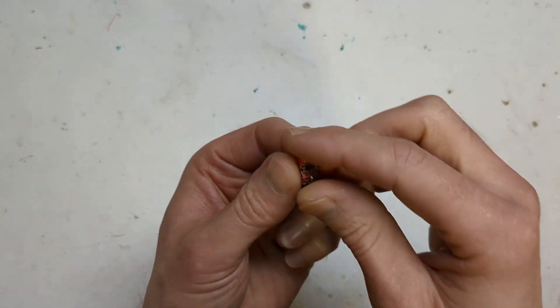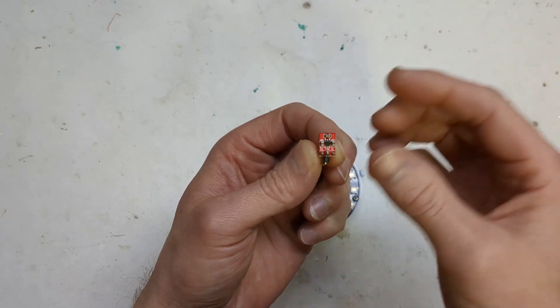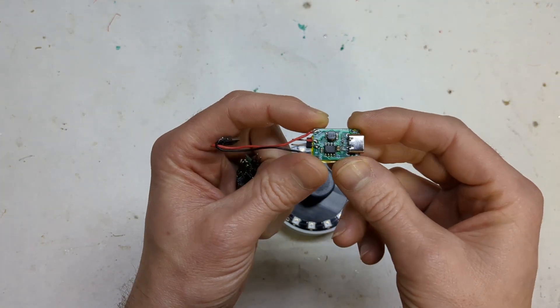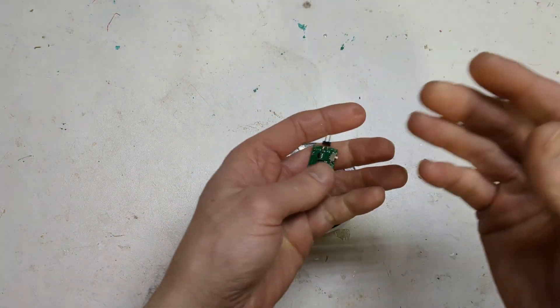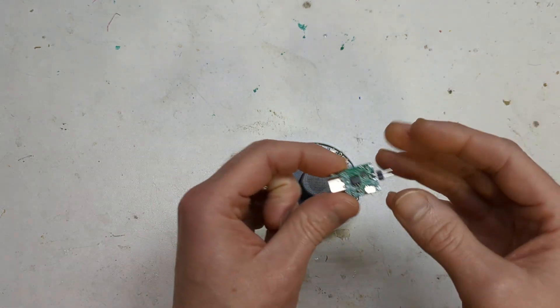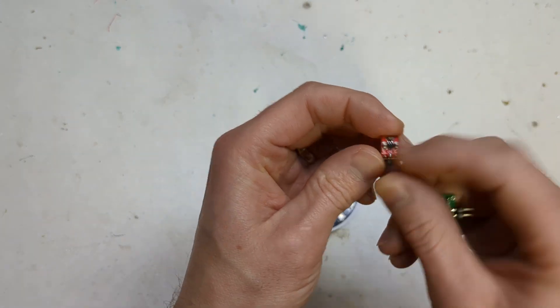But then also I found this other tiny little boost board to go with it, which is good for Arduino projects. Because sometimes Arduino projects don't suck enough power to use like a standard sort of power bank chip. So they'll kind of detect, I think it's 50 milliamps. Normally if it's less than that, it'll just shut off after a couple of minutes. So I found this tiny little boost board, which is good.